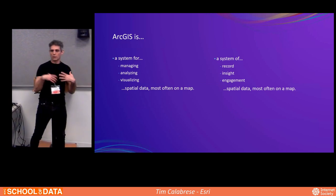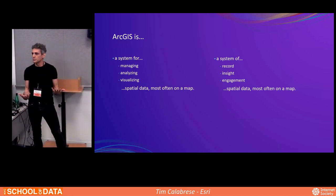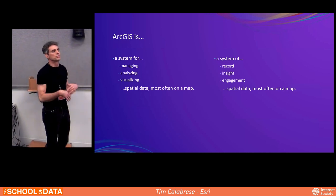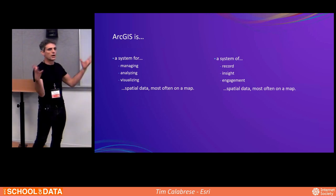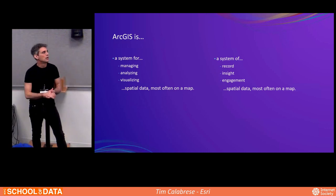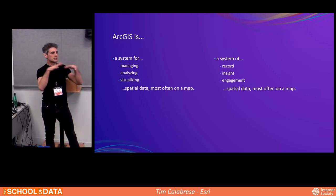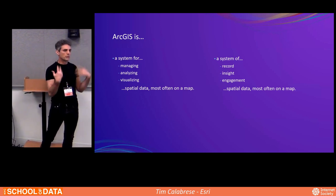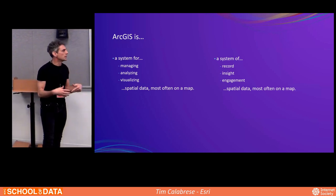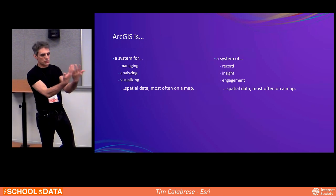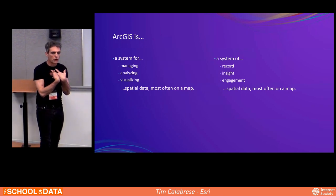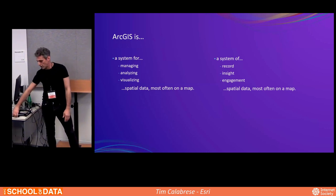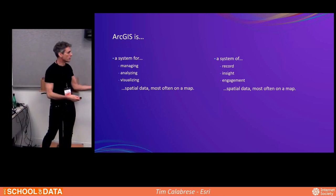People who have gone to school and learned this maybe in college — a geographic information system is a system for managing, analyzing, and visualizing spatial data. But these systems are big. They're systems of record, of insight, ways to learn things — and not just ways to learn things as the user, but to engage the public so that they can learn what you want to show them.